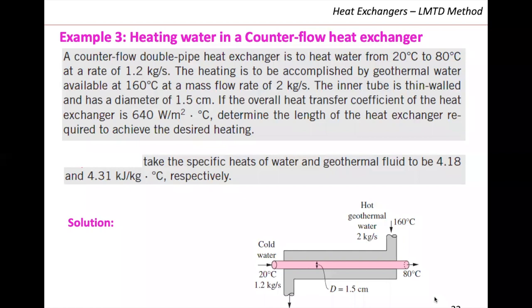Last class we were going through several examples on LMTD methods, and we were solving this heating water in a counterflow heat exchanger. We have two currents of water, one being geothermal water and the other one being cold, regular water. We were trying to find the length of the heat exchanger required to achieve the desired heating, knowing that the overall heat transfer coefficient is 640.